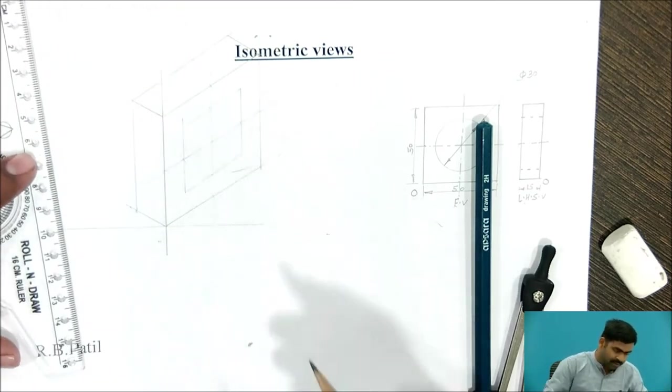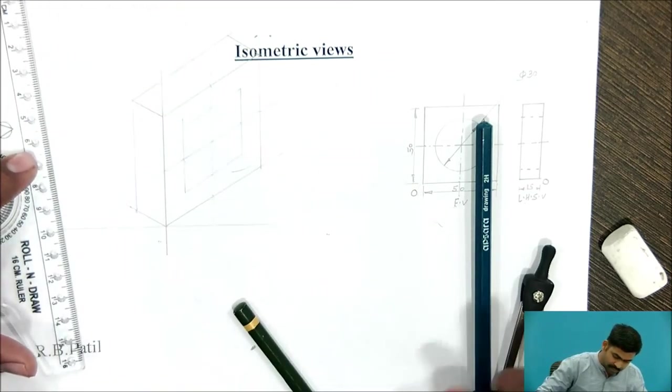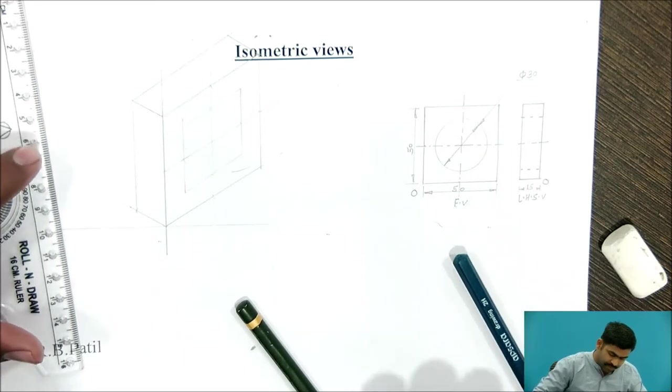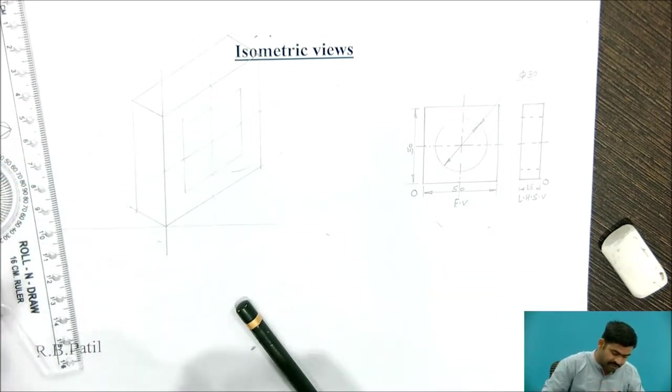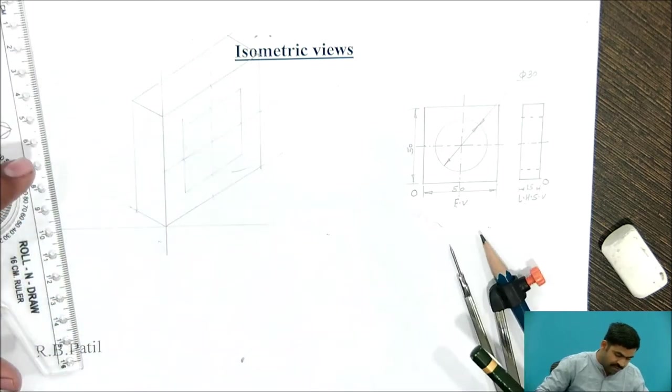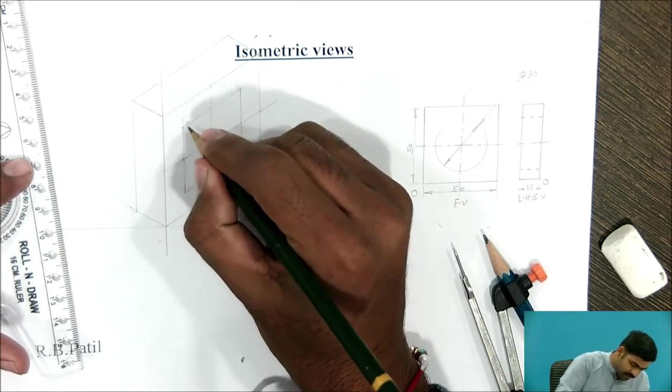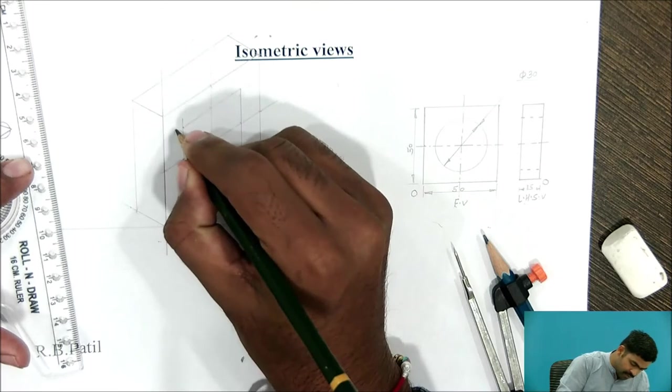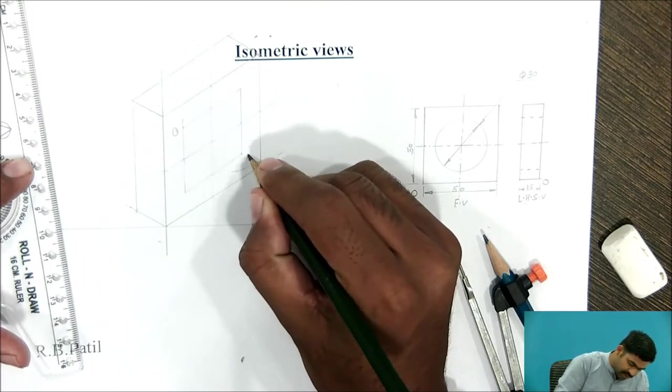When we complete this, we will get the box in rhombus shape, which has dimension of 30 by 30. Now, use 4 centre method, where this is first centre, this is second centre.